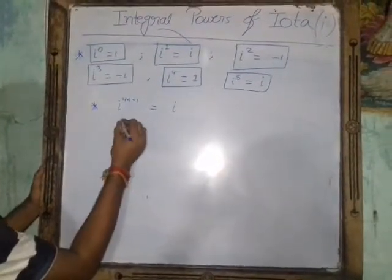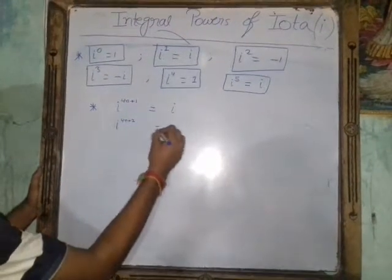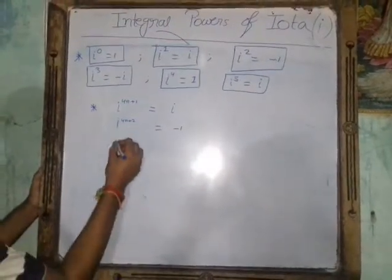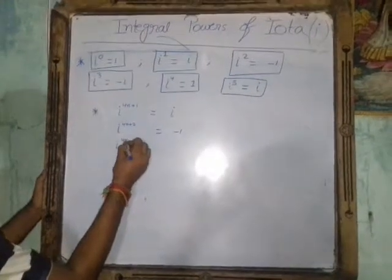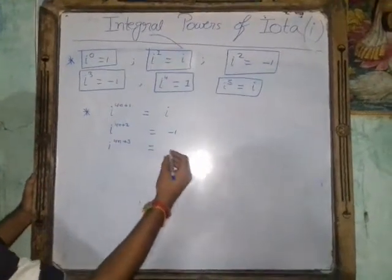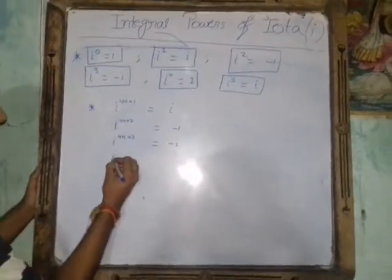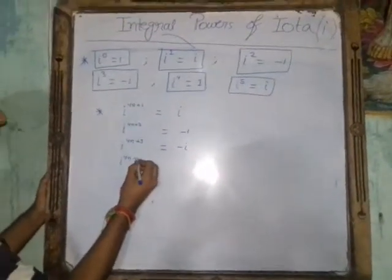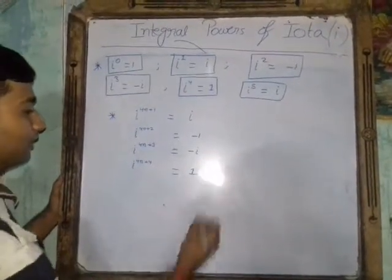When we get i to the power 4n plus 2, our answer is minus 1. When we get i to the power 4n plus 3, our answer is minus i. And when we get i to the power 4n plus 4, our answer is 1.